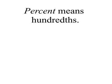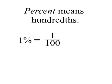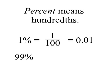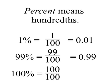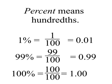Percent means hundredths. So if we have 1%, that's the same as 1 one-hundredth, and written as a decimal, .01. 99% then is the same as 99 hundredths, or .99. And 100% then is the same as 100 one-hundredths, or 1.00, which can also be written as just 1.